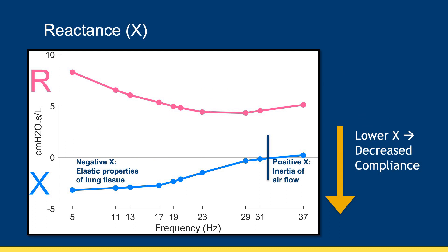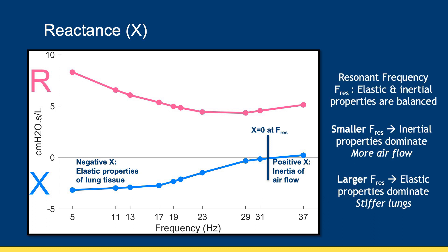Reactance, or X, is the other component of respiratory system impedance. X reflects the degree of compliance of the lung tissues and its value changes from negative to positive as oscillation frequency increases. Negative values of X measured at lower frequency oscillations represent the level of stiffness or elastance of the lung tissues — elastance is the inverse of compliance. Positive values of X measured at higher frequency oscillations represent the inertia of airflow through the lungs. The frequency at which X is equal to zero, where the elastic and inertial properties are balanced, is the resonant frequency.